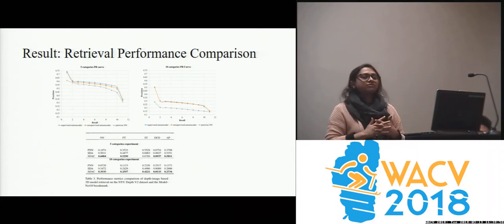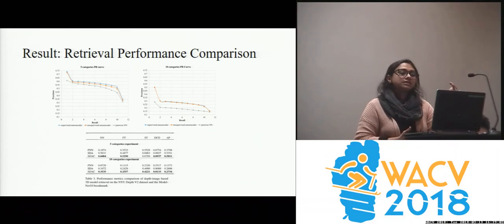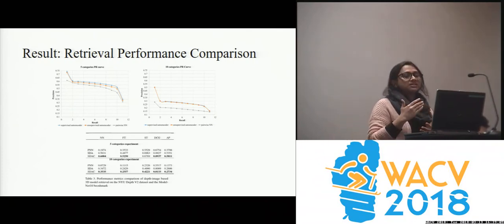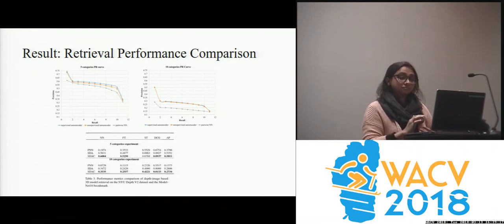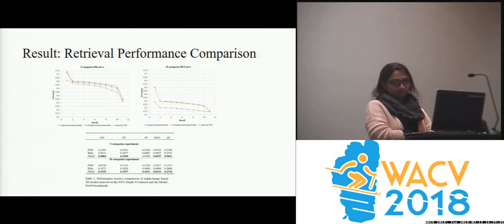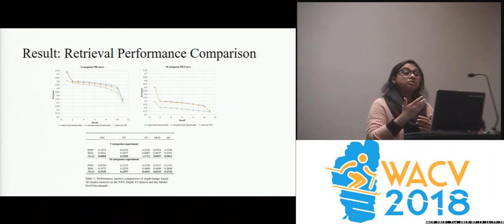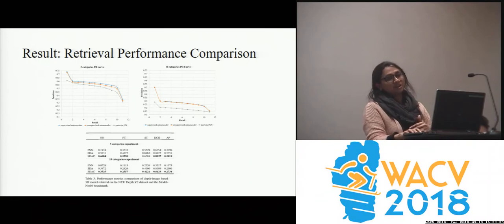We evaluated our retrieval performance using five different metrics: nearest neighbor, first tier, second tier, discounted cumulative gain, and average precision. The supervised approach performed best among the pairwise neural network and unsupervised approaches. In the five-category precision-recall curve, the supervised approach performs best. For ten categories, supervised still does better, though supervised and unsupervised have similar performance due to increased shape similarity and ambiguity.